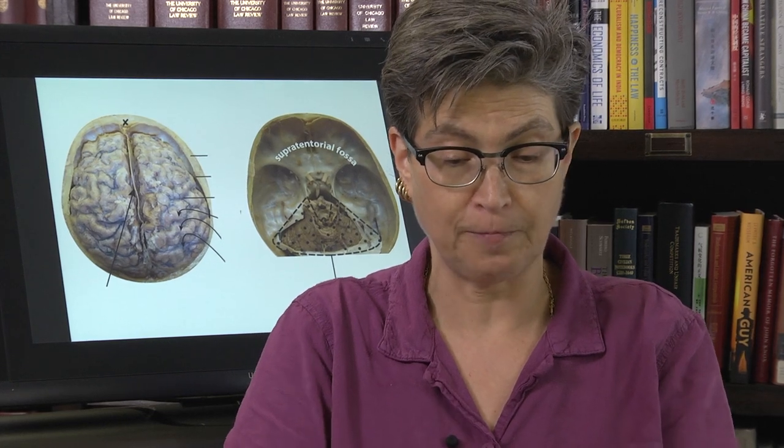Because of these two different folds, what we have are three compartments in the nervous system: the infratentorial space, which is the brainstem, the supertentorial left, and the supertentorial right.